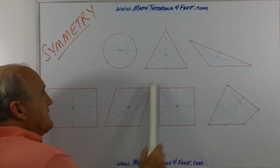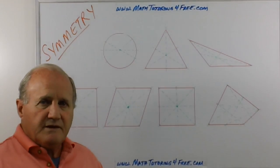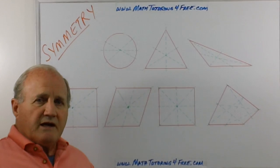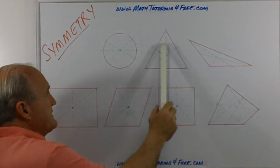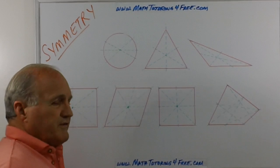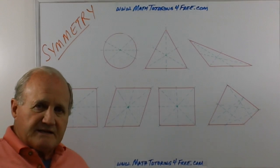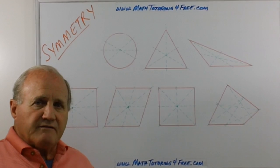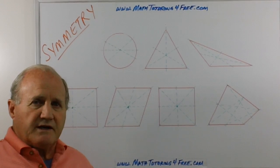Now in the case of an equilateral triangle, we know that each altitude drawn from each vertex would be a perfect line of symmetry because it cuts that triangle in half. Each one of those would cut it in half.